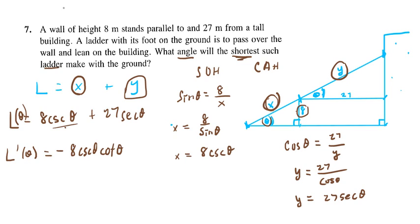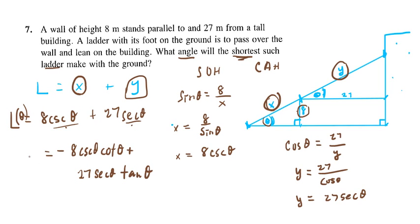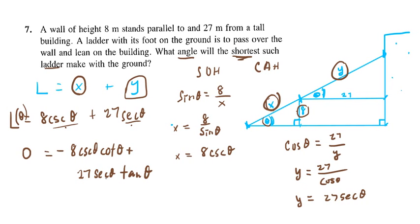The derivative of secant is secant theta tan theta, so we add plus 27 secant theta tan theta. You'll need to have those derivatives memorized from chapter 7, or use a cue card if your teacher allows it. Once we have L prime, we set it equal to zero and try to isolate theta. Moving terms gives us: 8 cosecant theta cotangent theta equals 27 secant theta tan theta.